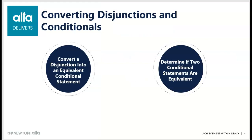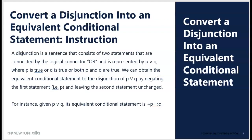In determining whether two conditional statements are equivalent: a disjunction is a statement that has or in it. It turns out the statement P or Q is equivalent to if not P, then Q. If I make the truth table for P or Q, it comes out the same as the truth table for if not P, then Q.